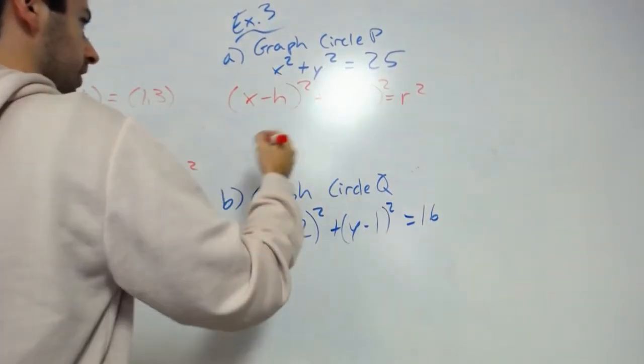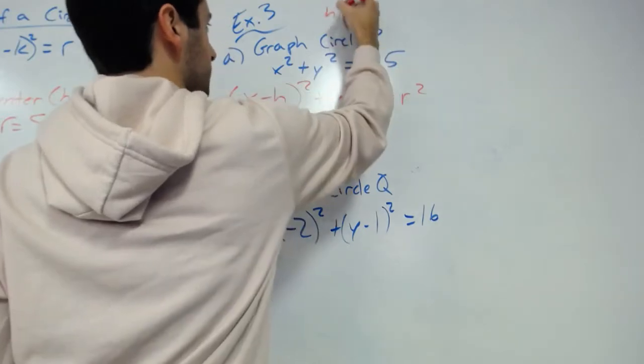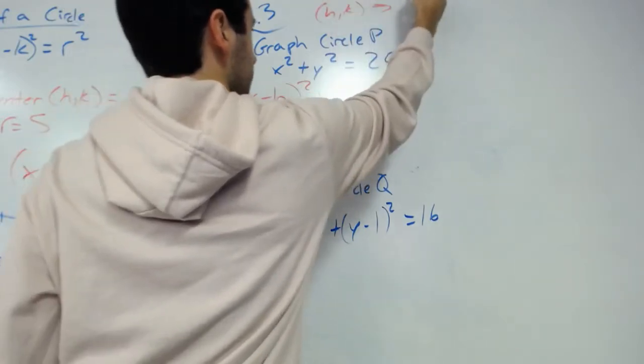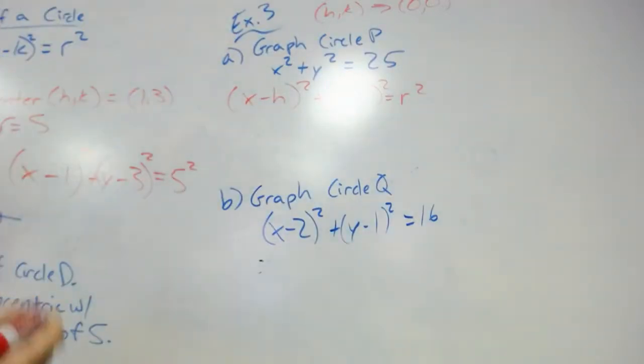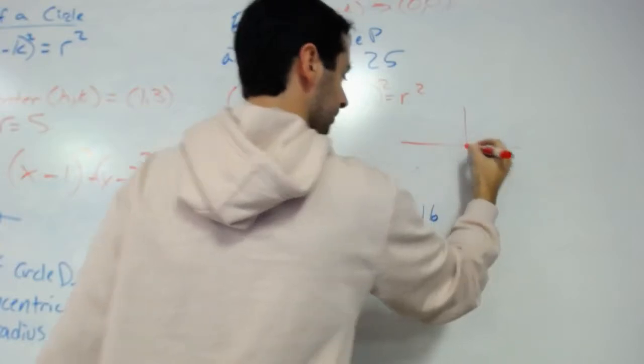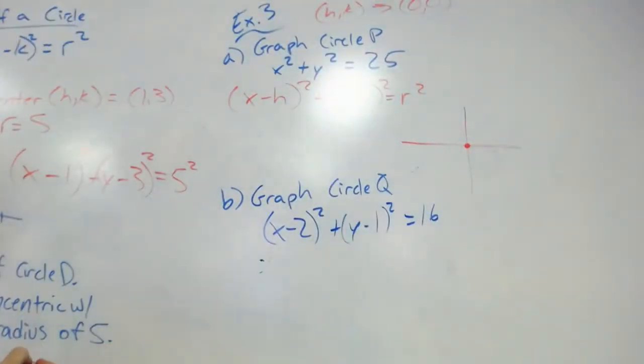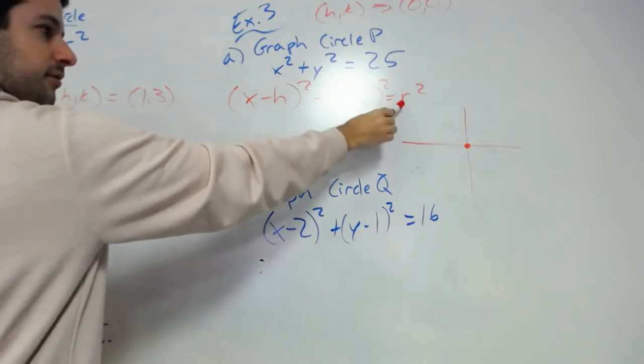Our center of the circle, or hk, is just (0, 0). If I'm graphing the circle, there is my center. What's my radius? It gives us 25, but we know it's r squared.